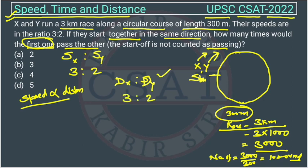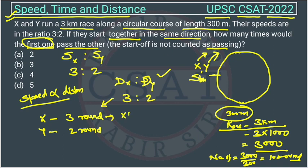Their distance will be in the ratio of 3 is to 2. This means when X completes 3 rounds, in the same time Y will complete 2 rounds. After 3 rounds, X is at the starting point, and after 2 rounds, Y is also at the starting point.